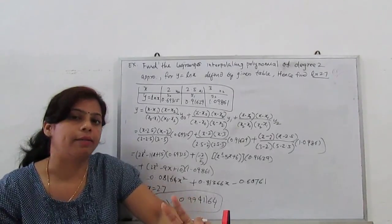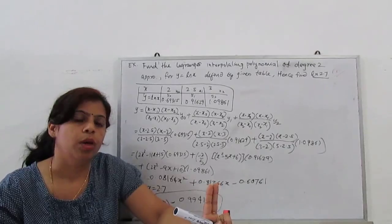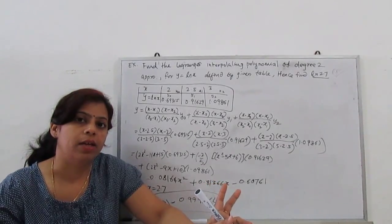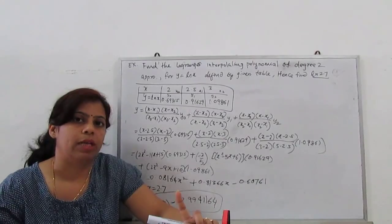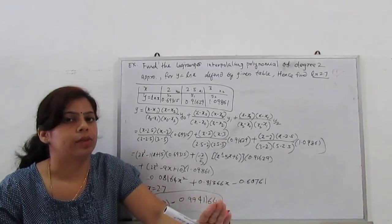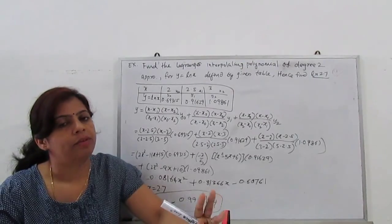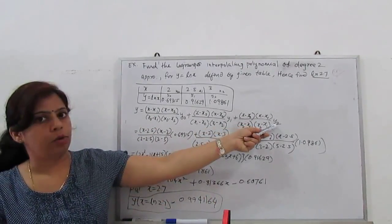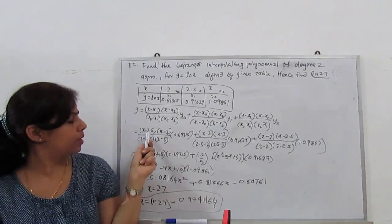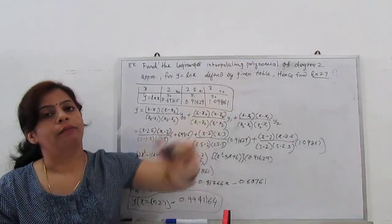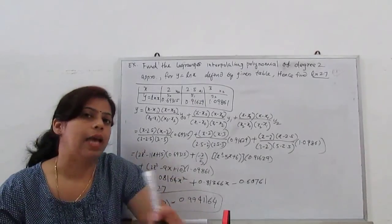First write the formula using these. There are only three points x0, x1, x2, so it gives 2 degree polynomial. With 2 points we get 1 degree polynomial, that's equation of straight line. Then 2 degree, 3 degree, 4 degree. For 2 degree polynomial we have 3 points.